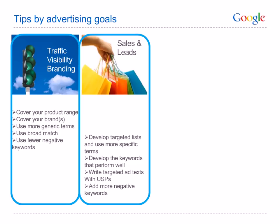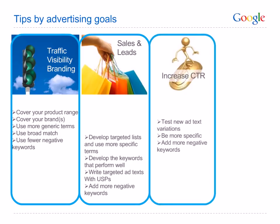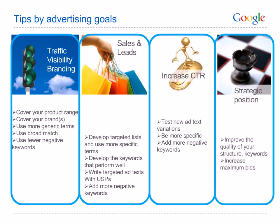If your goal is to increase sales and leads, try to develop keywords that perform well and are very targeted. If keywords have led to conversions — a purchase, sign-up to a newsletter, etc. — develop these keywords to maximise conversions. The more specific you are, the more likely you'll attract a potential buyer. A targeted ad text with buying calls to action and unique selling points is also important, as well as appropriate landing pages. You should create an exhaustive list of negative keywords. To increase your CTR, try adding more negative keywords to filter out irrelevant traffic and impressions, and make your ads more compelling to increase clicks. If you want to increase your position, work on the quality of your ads, keywords and landing pages — a better quality score will increase your position without you paying more. You can also adapt your bids to increase your position.